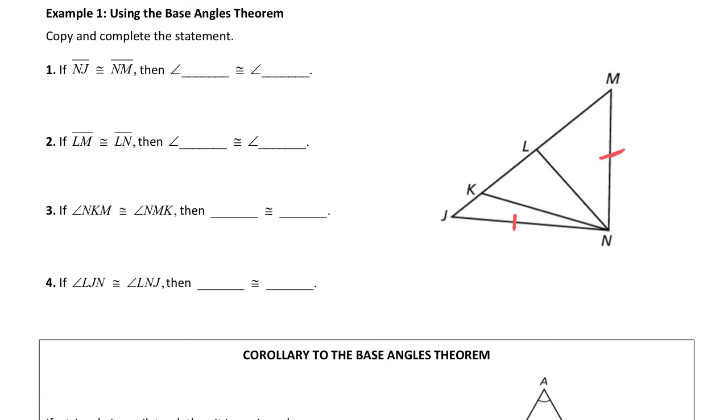I would say angle NMJ, which would be this angle right here, and then angle NJM, which would be this angle right here.